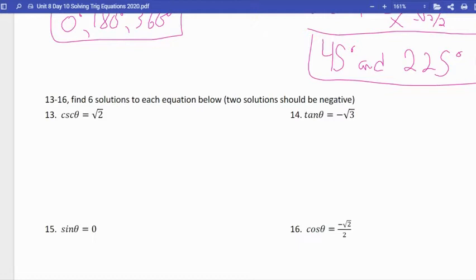So the reciprocal of cosecant is sine, and the reciprocal of root two is root two over two. And if you don't believe me on that, root two as a fraction can be written as root two over one. I'm going to make those arrows. That was bad. Shouldn't do an equal sign if they're not going to be equal.